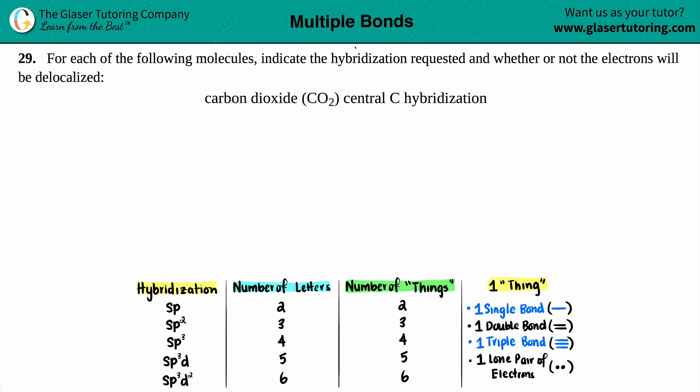Number 29: for each of the following molecules, indicate the hybridization requested and whether or not the electrons will be delocalized. In this case we have to draw carbon dioxide, CO₂, and find the central carbon's hybridization. The easiest way to find any hybridization is to draw the Lewis structure — it's one extra step, but with the visual of seeing what the molecule actually looks like, finding the hybridization will be much easier.